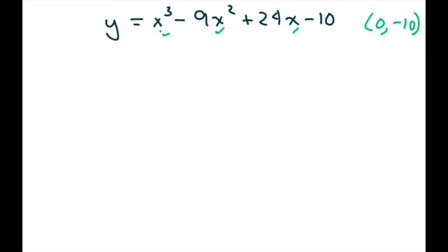Now the curve has a y-intercept here. So now we want to take the first derivative to check for the critical points. The first derivative y prime is going to be 3x squared minus 18x plus 24. And we're going to set this to 0 and factor.